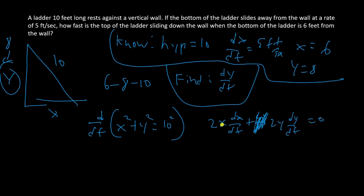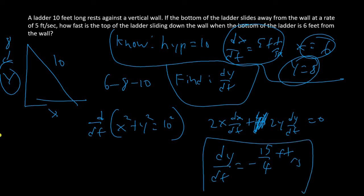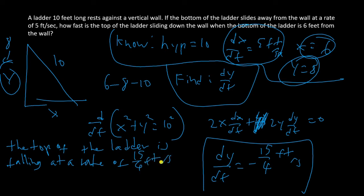This is awesome since we know 3 of the 4 variables in our equation. From our list of known variables, we know x, we know dx/dt, and we know y. Putting this in our equation and solving for dy/dt gives us that it is equal to negative 15 over 4. It's negative because the ladder is moving down. The units for this will be the units for y over the units for t, or feet per second. Writing this in sentence form, the top of the ladder is falling at a rate of 15 over 4 feet per second. So that's our sentence.